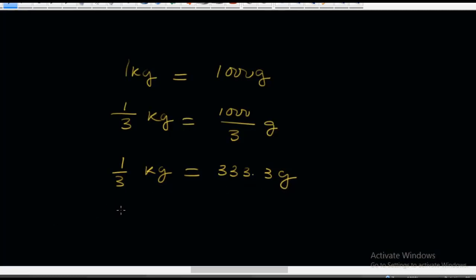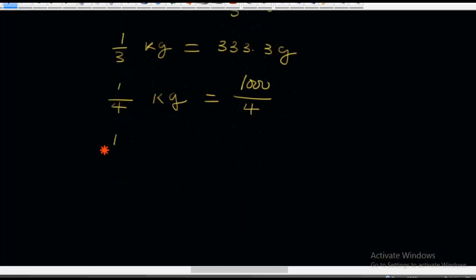What if we say 1/4 kg? That is the same as writing 1,000/4. So 1/4 kg is equal to 1,000 divided by 4, which is equal to 250 grams.